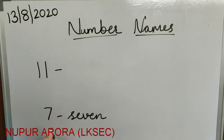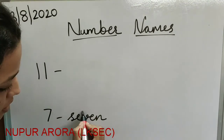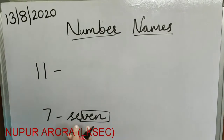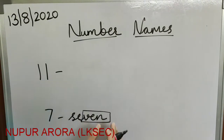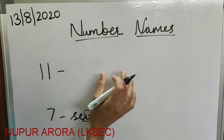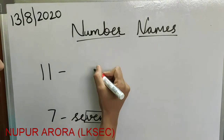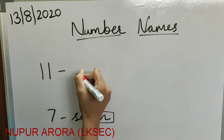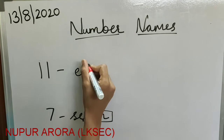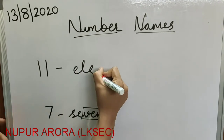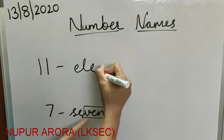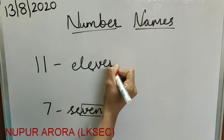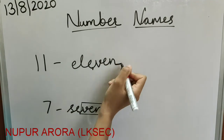From the spelling of 7, you have to pick out the ending — V, E, N. So for 11, you take that part: E-L-E-V-E-N. Easy!